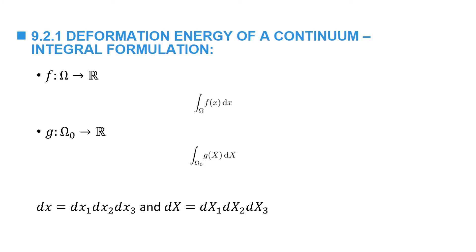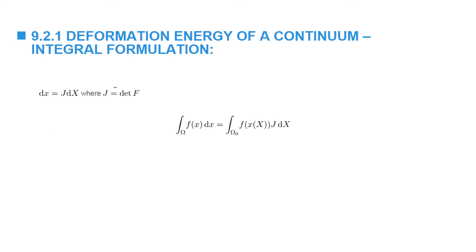I will start by reminding you of the syntax we use for integration over the deformed and the reference configuration. We use omega to represent the domain of the deformed configuration and small letters dx1 dx2 dx3 to represent a differential deformed volume. We use omega naught for the reference configuration and capital DX1 DX2 DX3 for the differential reference volume. The integrations over both configurations are related by a change of variables: small dx equals J multiplied by capital DX, where J is the determinant of F, the ratio of volumes.